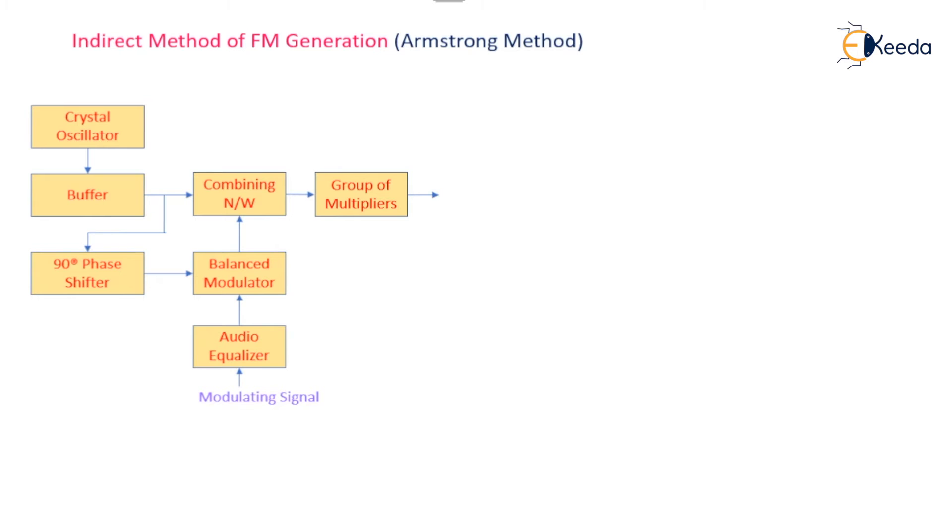The group of multipliers multiplies the frequency and couples it to the mixer and crystal oscillator for frequency up-conversion. Again, it will be further multiplied with the help of another group of multipliers.